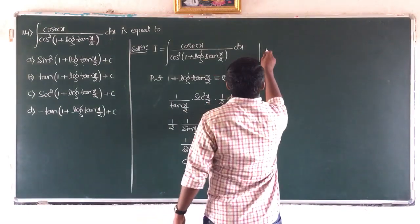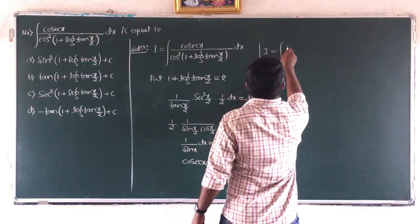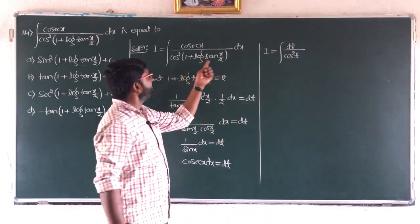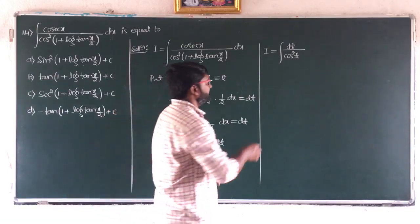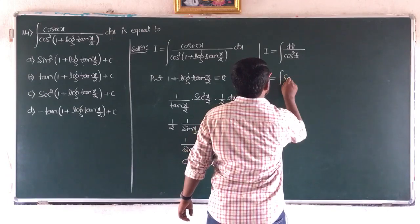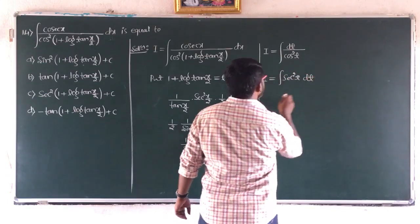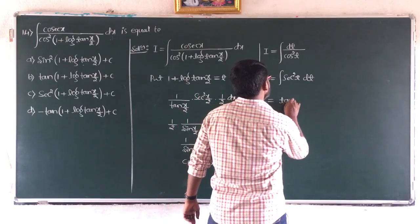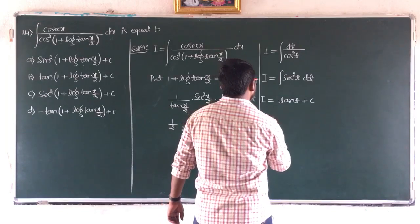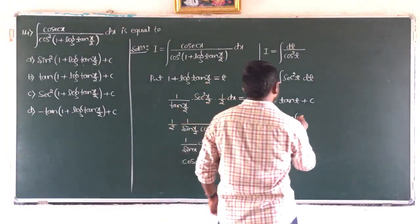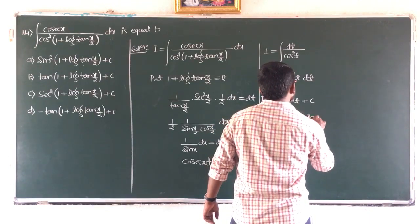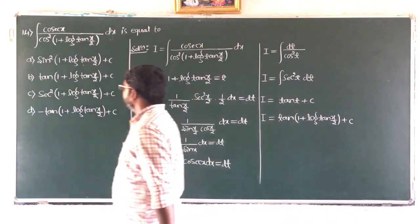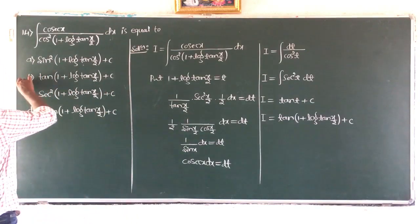The integral becomes I equals integral of dt divided by cos²(t), since the entire bracket is t. Now 1/cos²(t) is sec²(t), so I equals integral of sec²(t) dt, which gives tan(t) plus c. Replacing t: I equals tan(1 plus log(tan(x/2))) plus c. Hence the answer is option B.